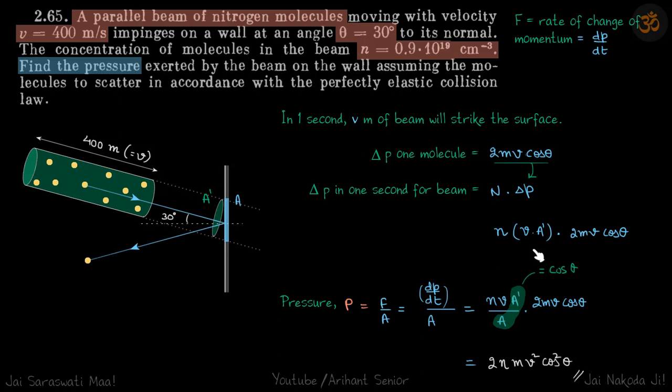So we get this, which is our force. Now pressure is force upon area. Here A is the area of the wall surface, not A dash. Pressure is force upon area. Force is dP by dt, which we just calculated. So we'll put that value here.